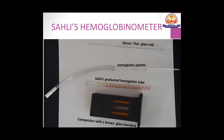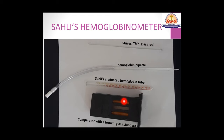In Sahli's hemoglobinometer we do the quantitative estimation of hemoglobin. We fill the hemoglobin tube with N/10 hydrochloric acid till the 2 gram percent mark, then add 20 microlitre of blood to this tube. We keep it for 10 minutes for the formation of acid hematin, during which all the hemoglobin gets converted to acid hematin. After 10 minutes we start adding N/10 HCl or distilled water drop by drop until the color matches the comparator glass standards.